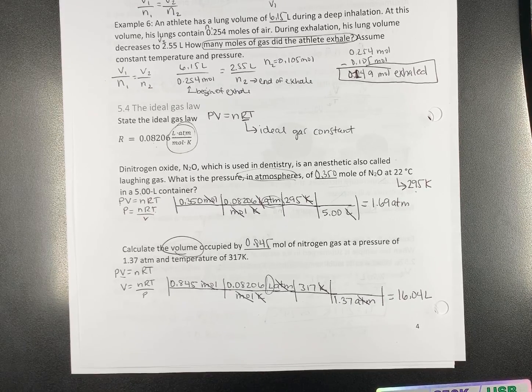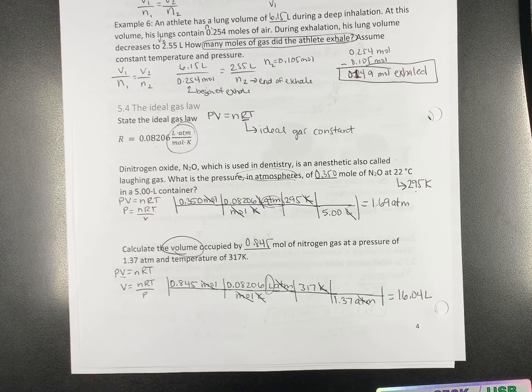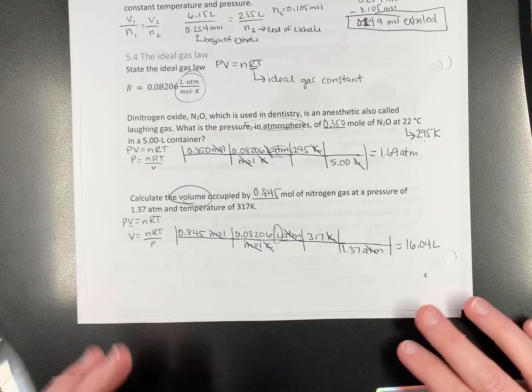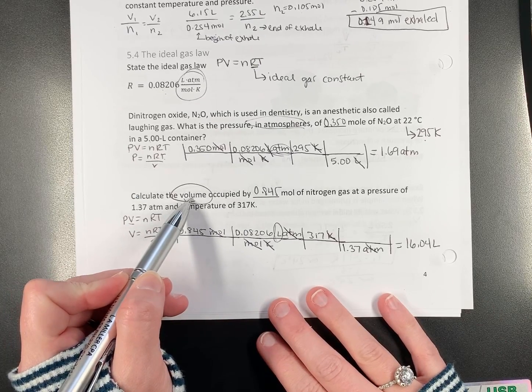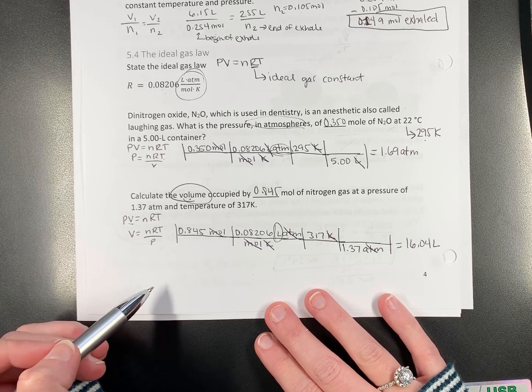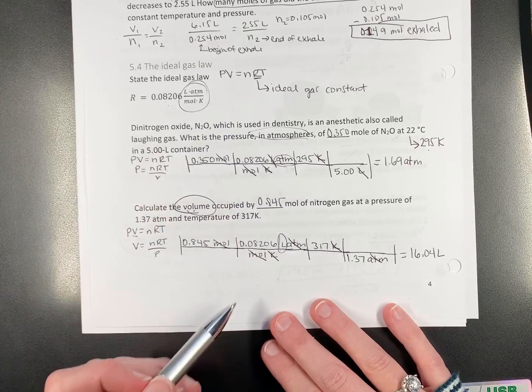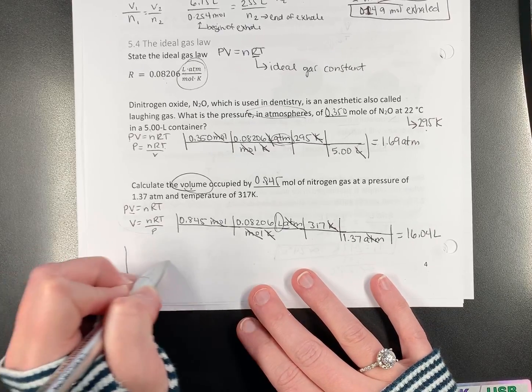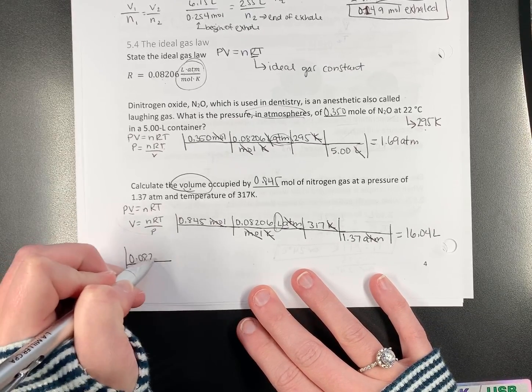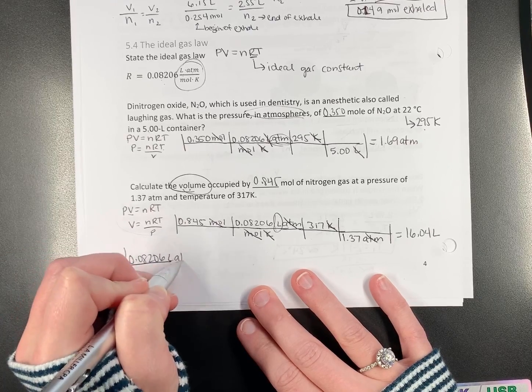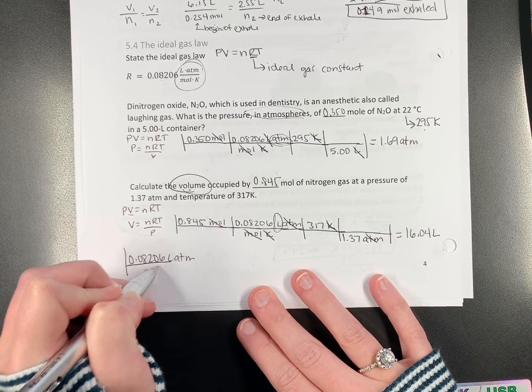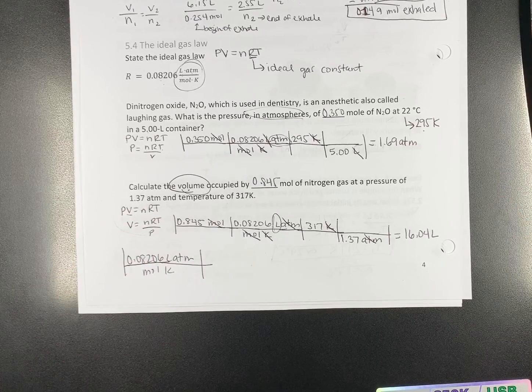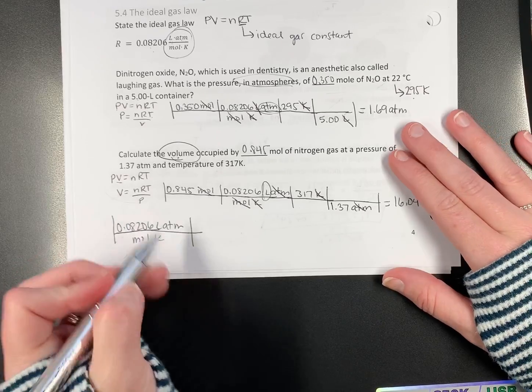I work gas law problems by starting with R because I love units. When this says calculate volume, I don't want to remember all that. So, I'm going to look at R and say, oh, liters are in the top. Most of you are probably going to hate this, but my brain works a little weird. So, I always start with R, and then I cancel everything else out. So, it's just in a different order, but it all works out the same.